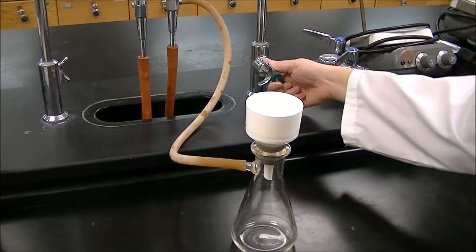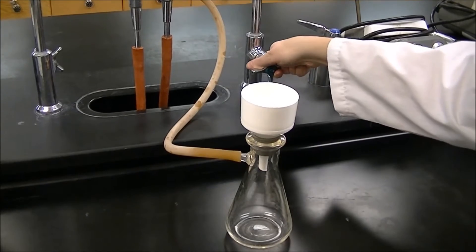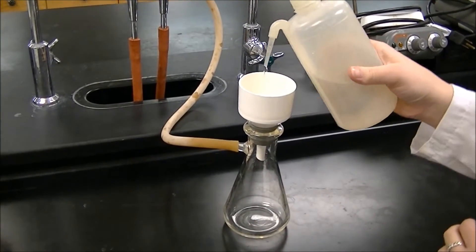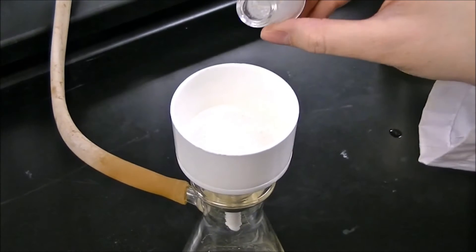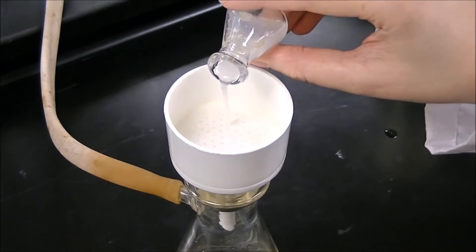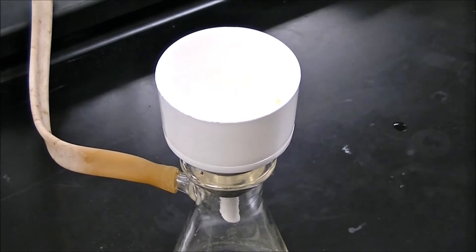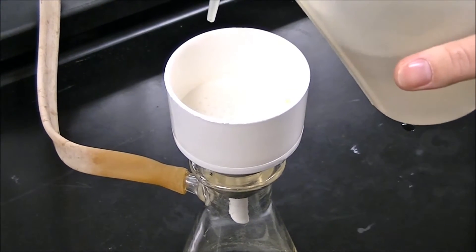Start by turning on the water to create a vacuum and lightly wet the filter paper with distilled water. Now add the aqueous solution to the filter. When all the water has been filtered, wash the filter paper with water.